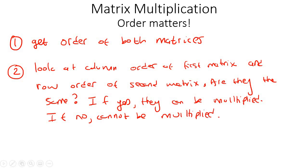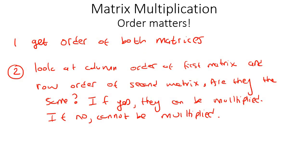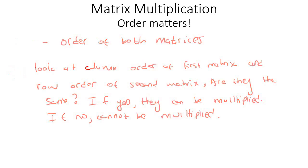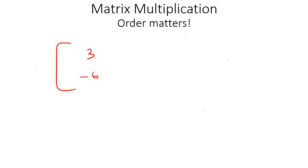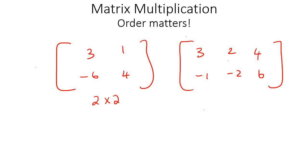Let me show you with an example. Say we have a matrix with elements 3, -6, 1, 4, and the other one is 3, 2, 4, -1, -2, and 6. The first one is a 2 by 2, the next one is a 2 by 3 — remember, it's always the row first, then the column. Look at the column number of the first matrix and the row number of the second: these two inner numbers. Are they the same? Yes, they are, so you can multiply them.